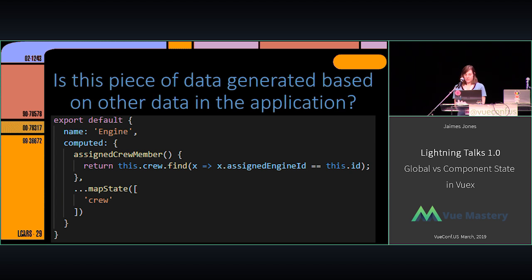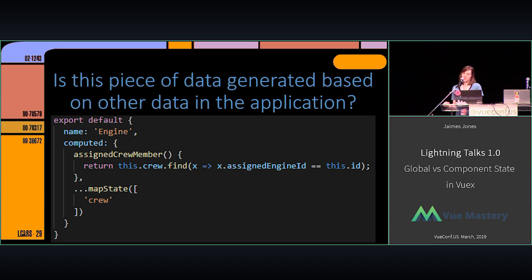Another thing to consider is: is this piece of data generated based on other data in the application? Using the same example, the assigned crew member is a piece of data used in the engine, but it's generated based on the crew and the information in the crew itself.